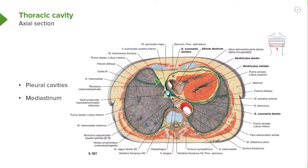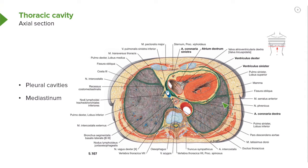That means that the left side of the image is the right side of the individual, and the right side of the image is the left side of the individual. Here is your right lung within the right pleural cavity, and here is the left lung, a resident of your left pleural cavity.